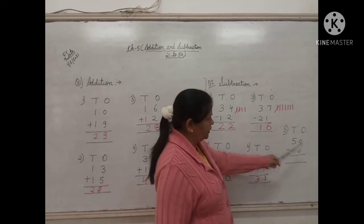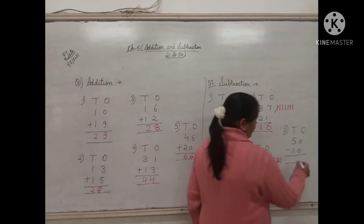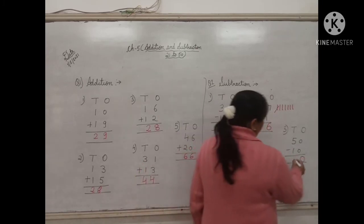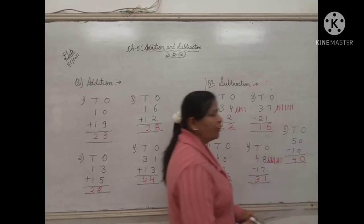Now the last example. 0 minus 0 will be 0. And 5 minus 1 will be 4. So the answer is 40.